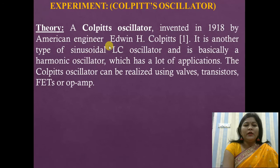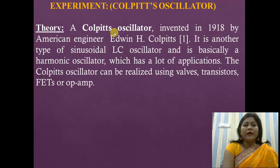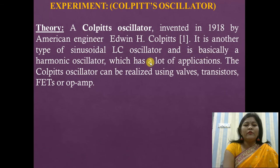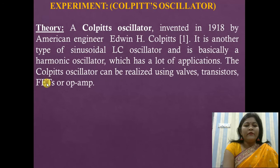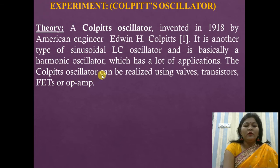The Colpitt's oscillator was invented in 1918 by the American engineer Edwin H. Colpitt. It is another type of sinusoidal LC oscillator and it is basically a harmonic oscillator with many applications. The Colpitt's oscillator can be realized using valves, transistors, FET (field effect transistor), or op-amp (operational amplifier).